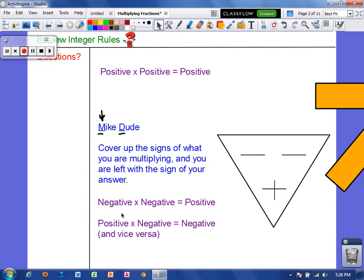Now, if we're multiplying a positive times a negative, we would cover up a positive and a negative on MikeDude. We're left with a negative, and we would have a negative answer. Same thing goes for a negative times a positive. When we cover those up, we get a negative answer. So we're going to use MikeDude today to determine the signs of our answers.